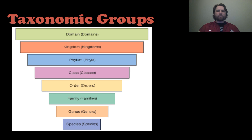Everything is divided up — all of the species we know of are divided into domains, kingdoms, phyla, classes, orders, families, genera (which is the plural for genus), and species.